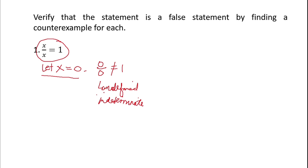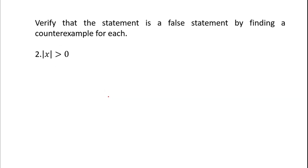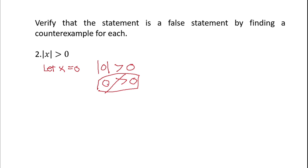Therefore, by letting x equal to 0, we disprove that x over x is equal to 1. Example 2: Verify that the statement |x| > 0 is a false statement. We again let x equal to 0. The absolute value of 0 is 0, and 0 is not greater than 0 — it is equal to 0. So by counter example, letting x equal to 0 disproves the statement that |x| > 0. One counter example is enough to disprove a 'for all' statement.